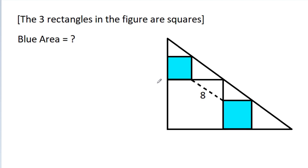In this video, we have given 3 squares inside a triangle and this dotted line is 8, then we have to find the blue area.